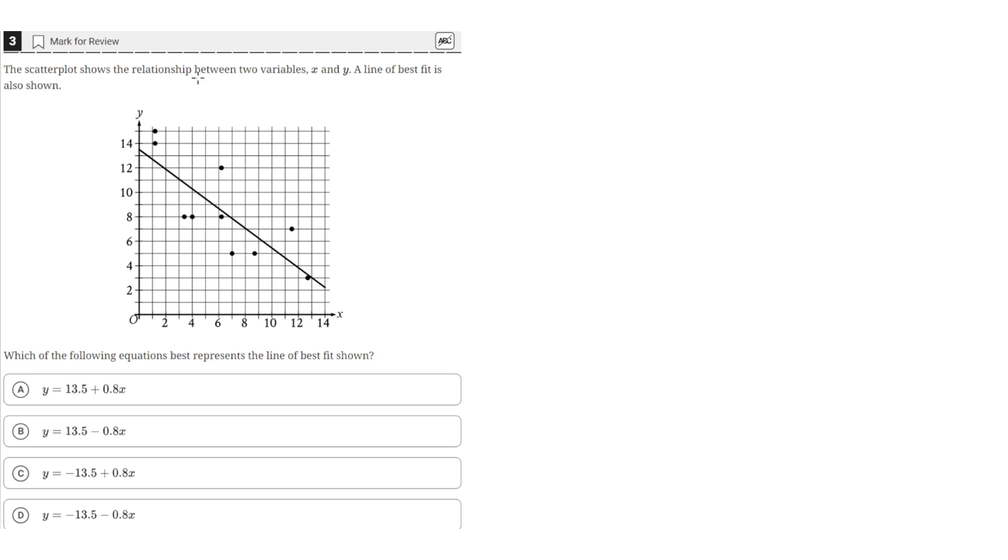The scatter plot shows the relationship between two variables, x and y. A line of best fit is also shown. Which of the following equations best represents the line of best fit shown?